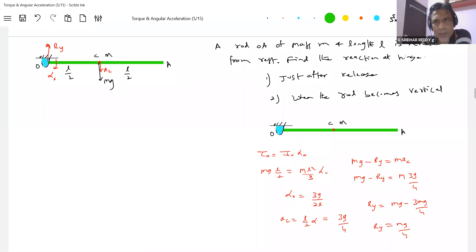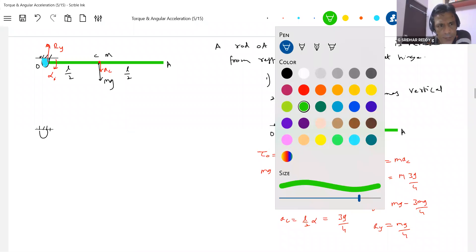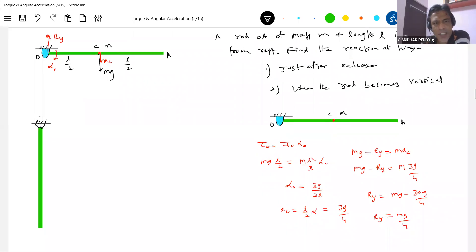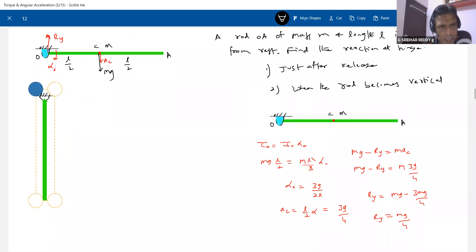Finally, the rod will become vertical. I will show another diagram. I will show another diagram. When the rod becomes vertical, what is the situation here? What conditions will be? What is the state of the rod? I'll just show it in this video.